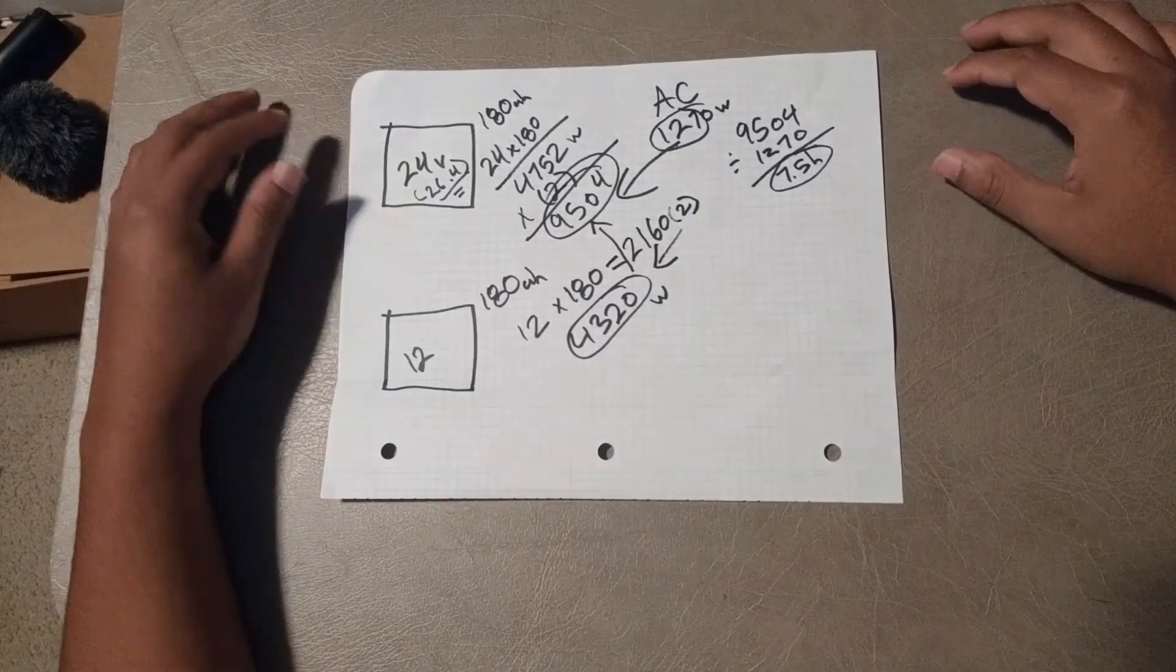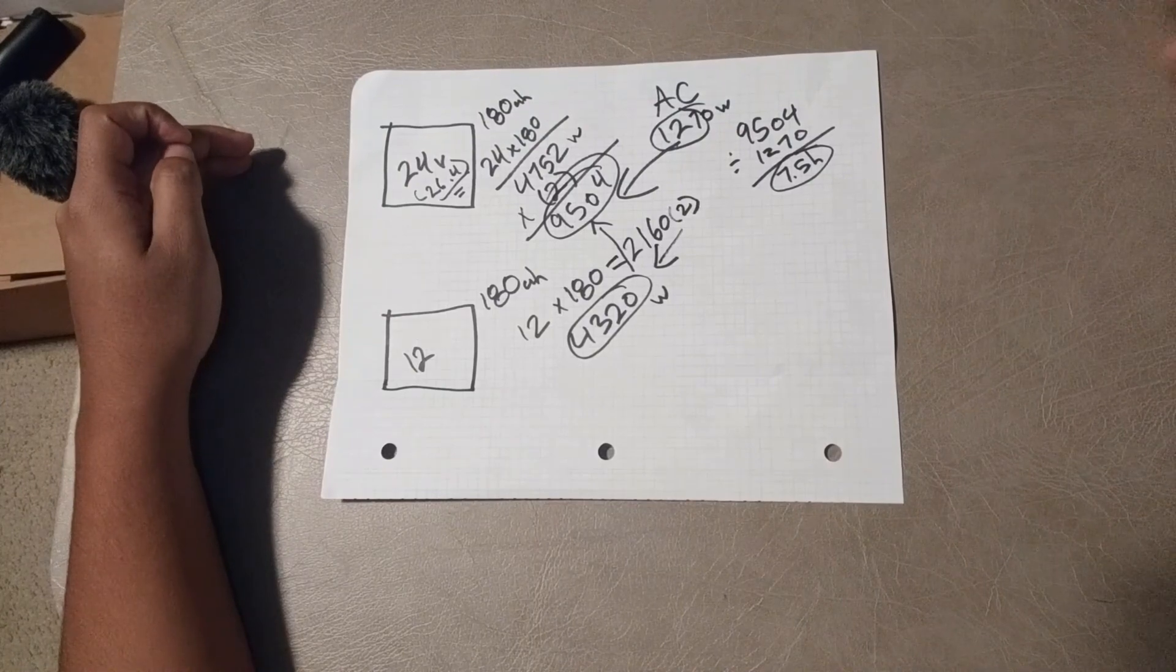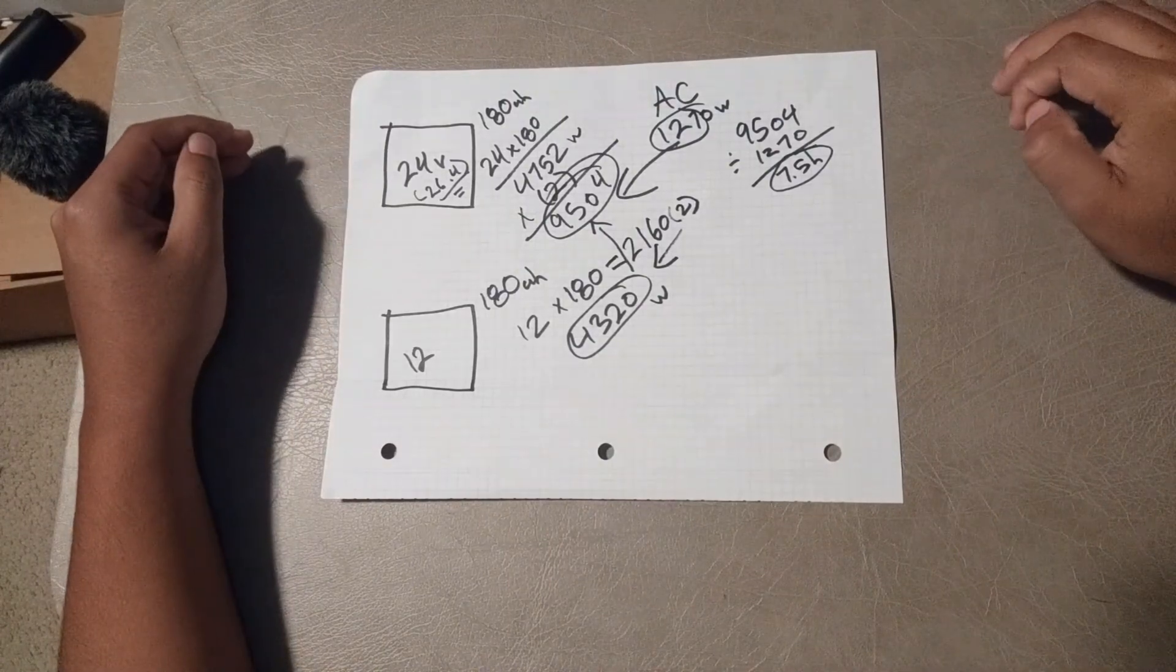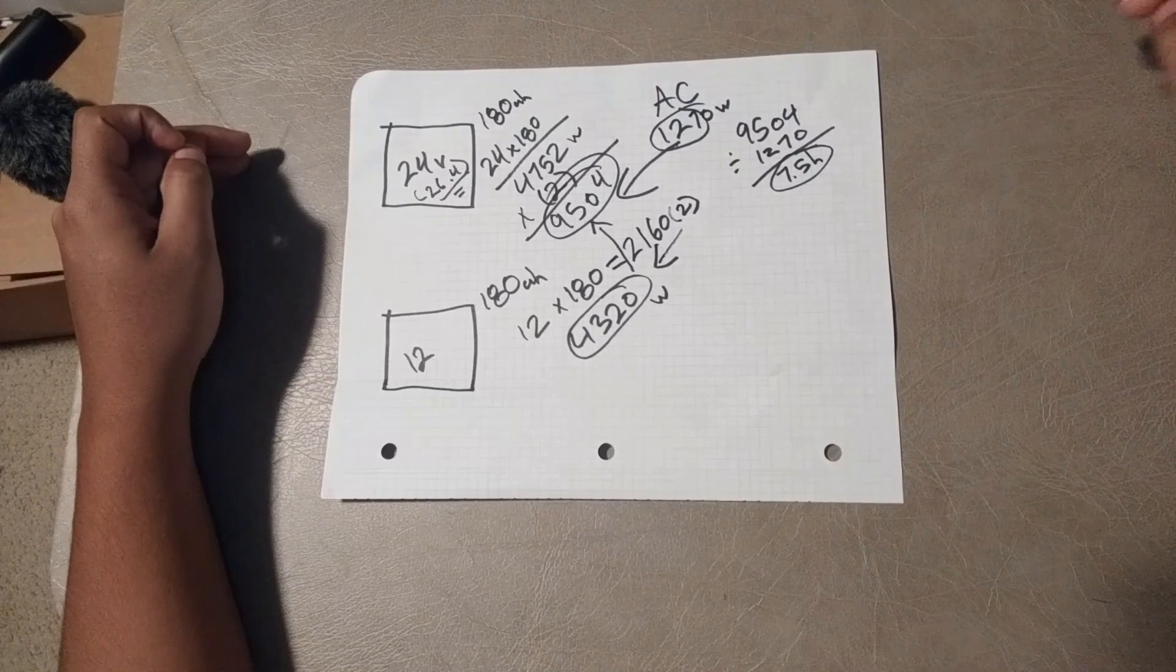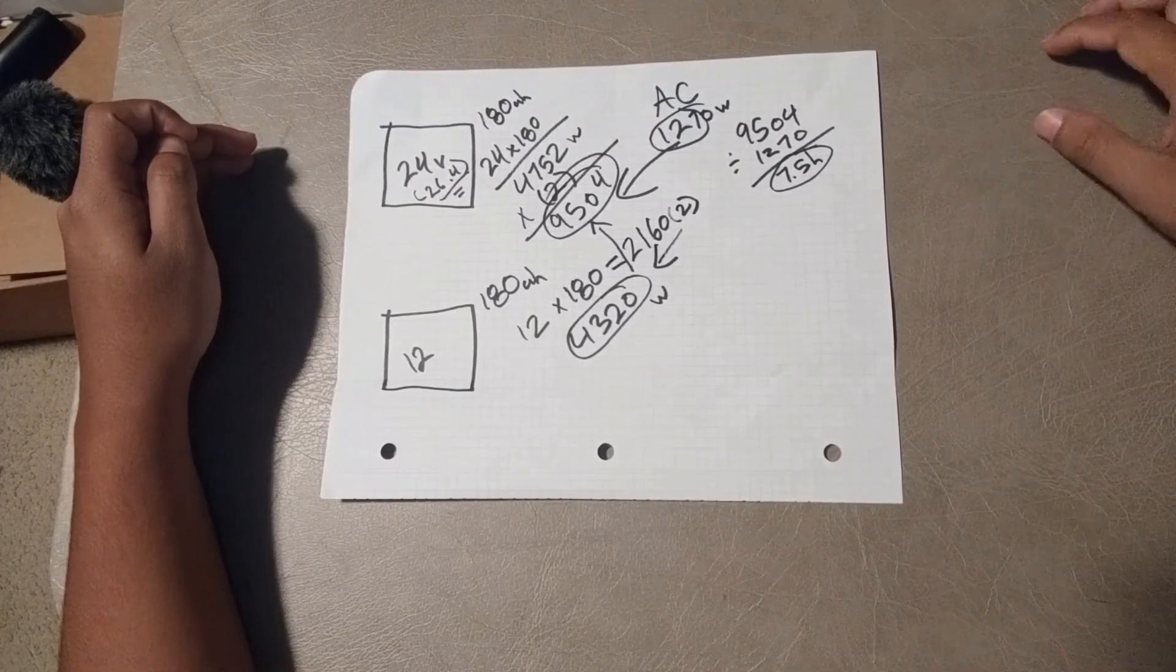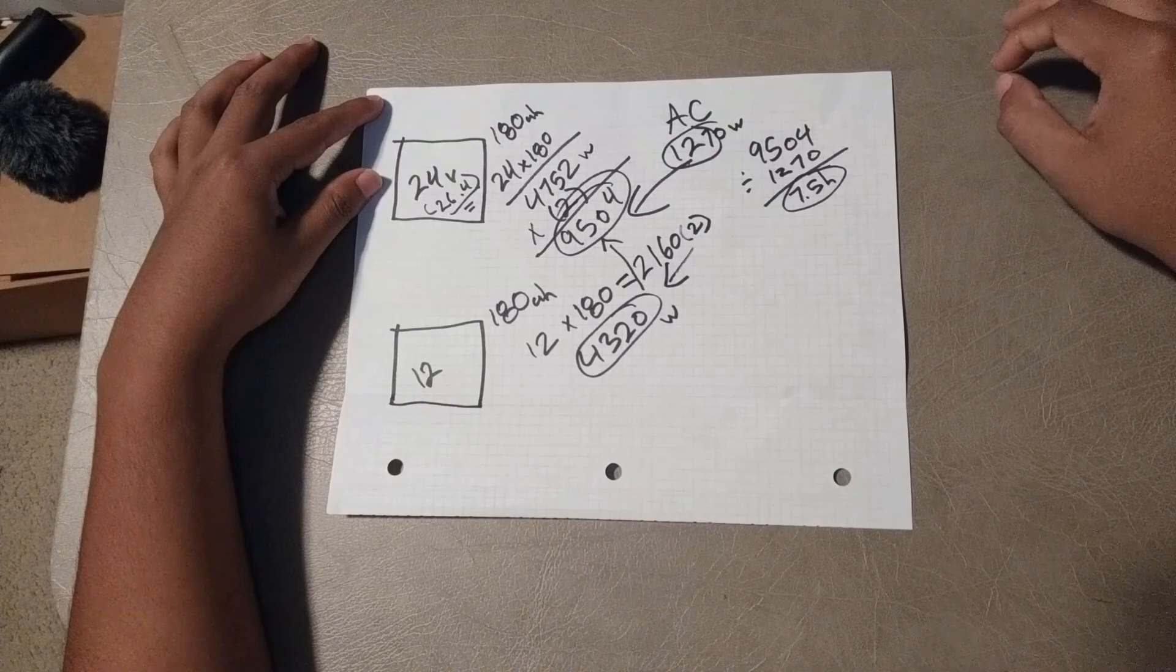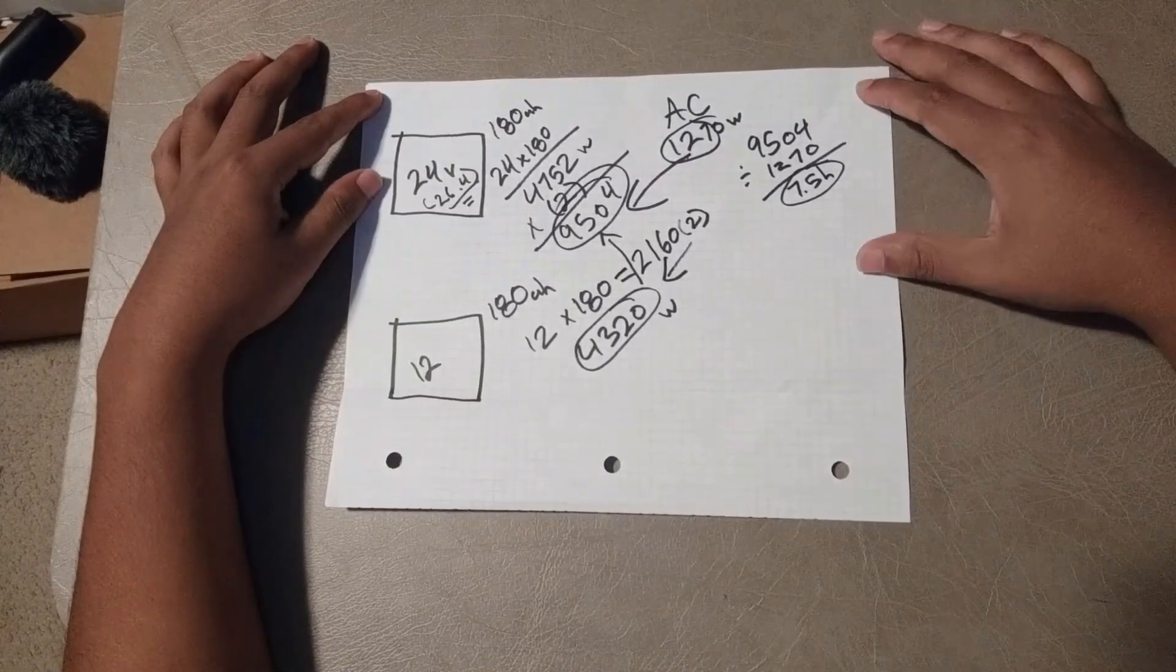This is just calculating if we're only running the AC alone so the time might vary if we're running other appliances as well. So you guys can use this method to figure out how long you guys can power all sorts of items like microwave and hot water heaters, but just keep in mind that this doesn't include anything like solar panels and alternators because that will keep charging the system at different rates and this is just by the batteries themselves.